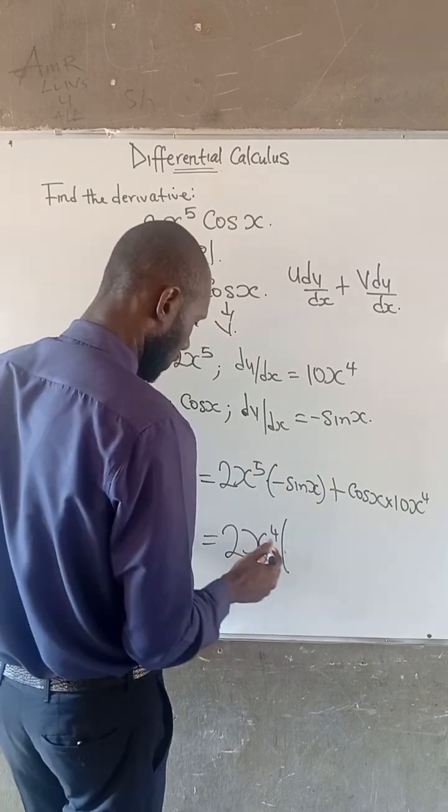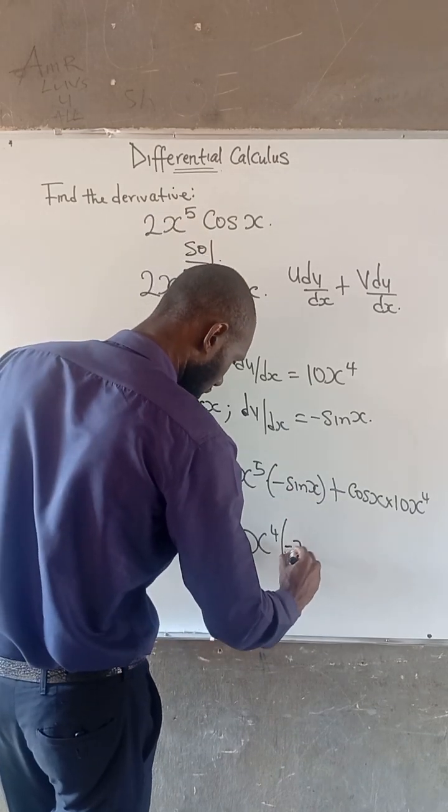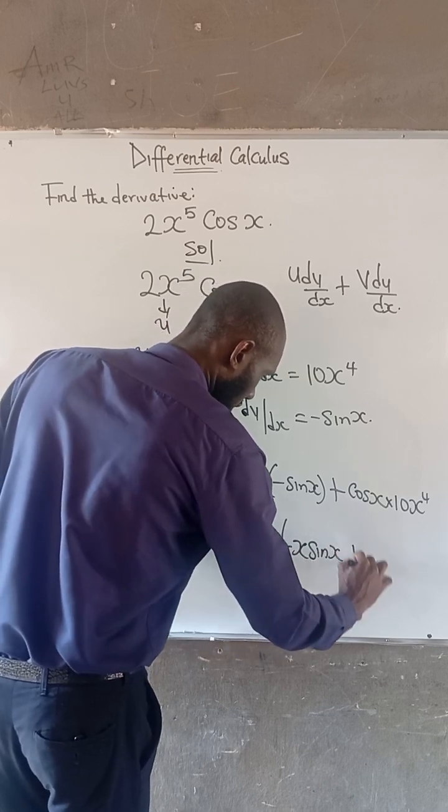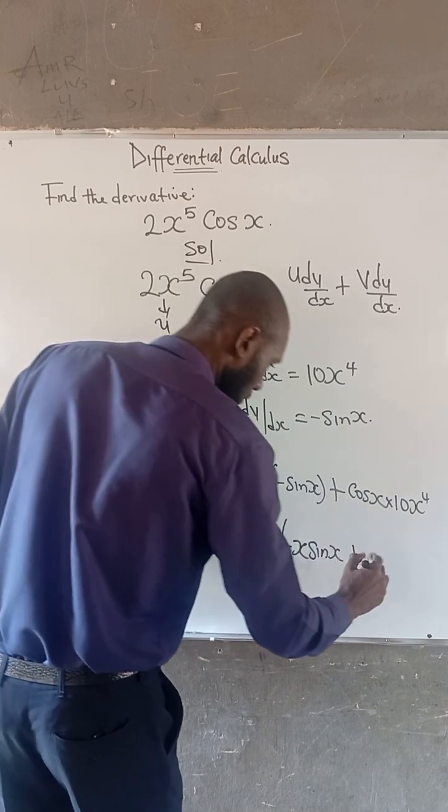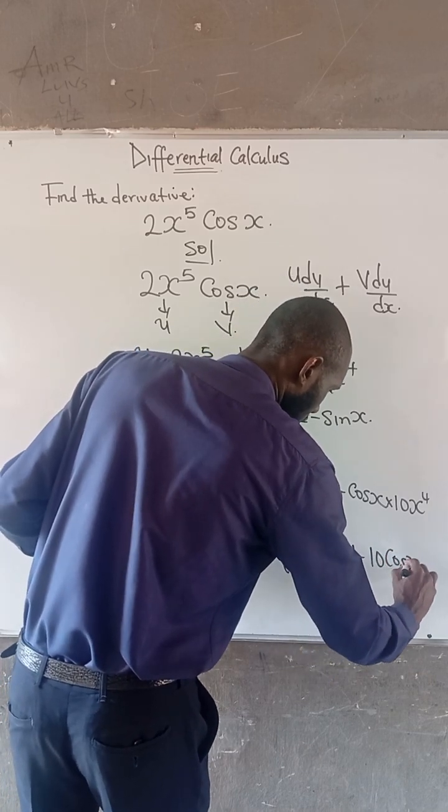Open the bracket. So what will be left here is minus x sine x plus, here I will be left with 10 multiplied by cos x.